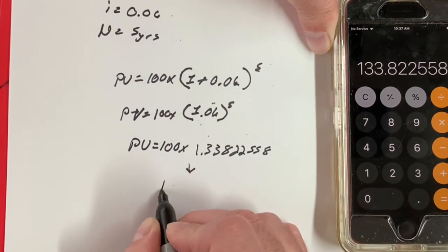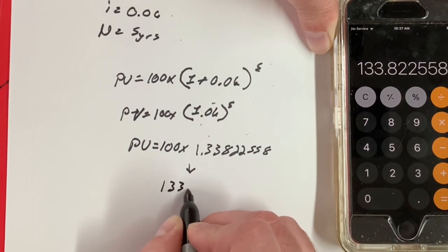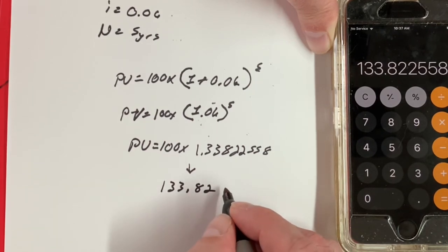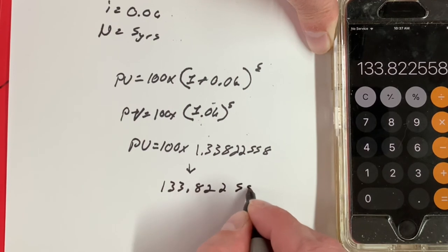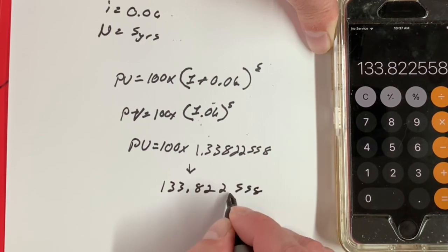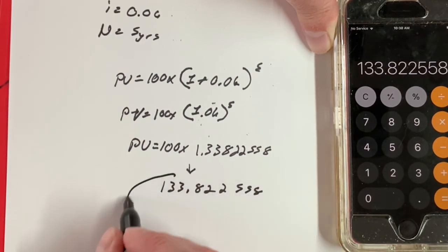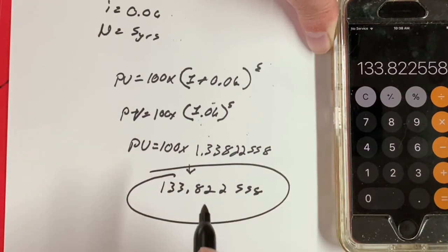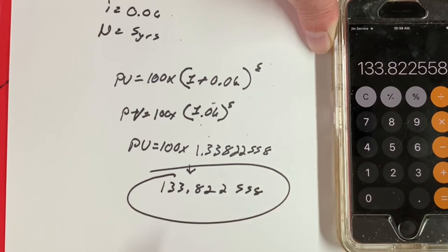Our final answer is 133.822558. And that's your final answer right there. And that's what you were looking for. And this is the future value of an investment on a four-function calculator.